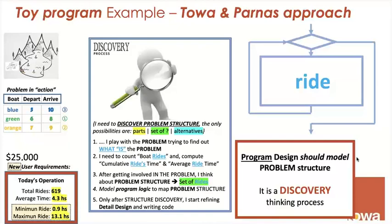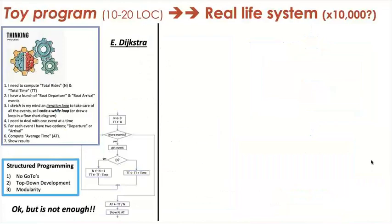Program design should model problem structure. It is a discovery thinking process. It is not a design. I want to give you an example. When Columbus 500 years ago decided to navigate to the West, he discovered America. He didn't design America. America was there. He just discovered it by accident. He wasn't looking for America, but he discovered America. America was discovered. America was not designed. The same here.